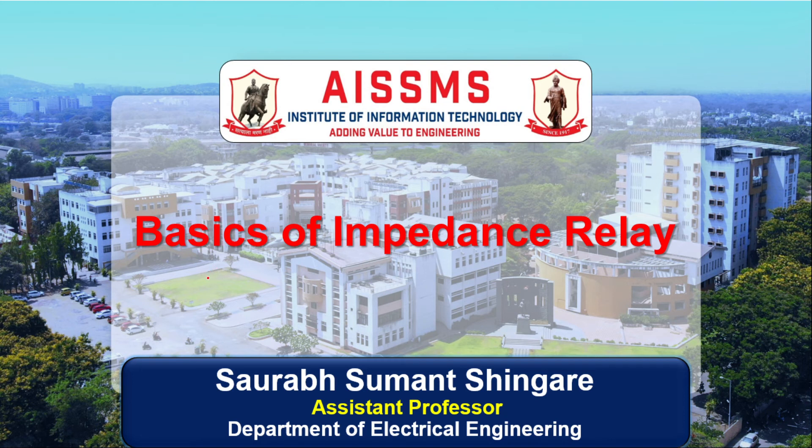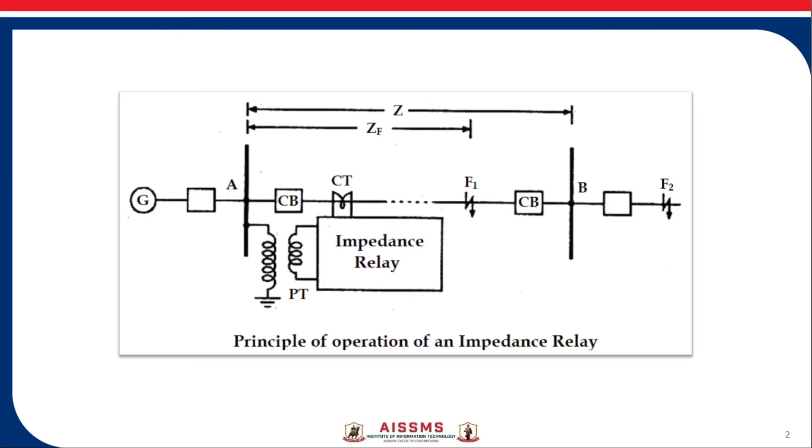In distance relays the operation is dependent on the ratio of voltage and current which is expressed in terms of impedance. Hence basically distance relays are called impedance relays. The impedance is the electrical measure of distance along a transmission line. This is also called as ratio relays.